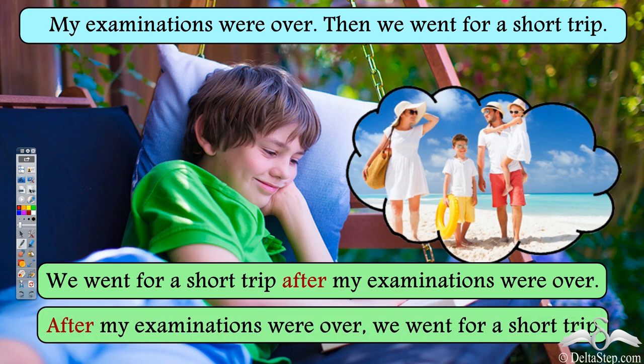We can also write the sentence in another way. We can start the sentence with 'after': 'After my examinations were over, we went for a short trip.' You will see that 'examinations were over' happened first, and after that 'we went for a short trip.' So we put a comma here to make it clear which action happened first and then which action happened.